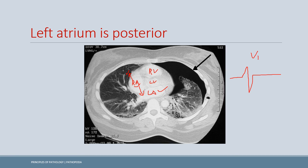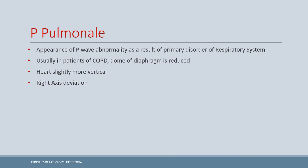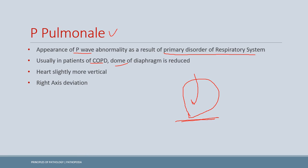P pulmonale is defined as the appearance of right atrial P wave abnormality — right axis deviation and increased amplitude — when these ECG changes result from a primary disorder of the respiratory system. This is usually seen in COPD or emphysema patients where a flattened diaphragm causes the heart to appear more vertical, shifting the mean axis to the right.